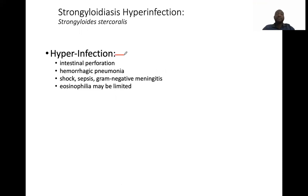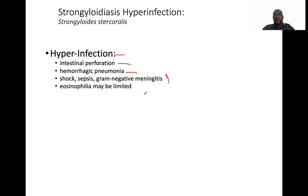This parasite has a tendency to cause hyper-infection due to repeated auto-infection, especially in immunocompromised individuals, and can lead to intestinal perforation, hemorrhagic pneumonia, septic shock, and even gram-negative meningitis in cases of disseminated strongyloidiasis.